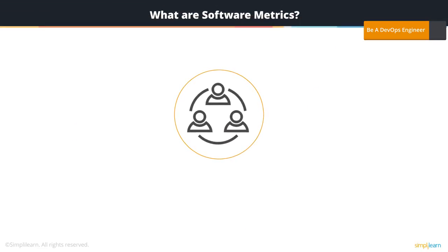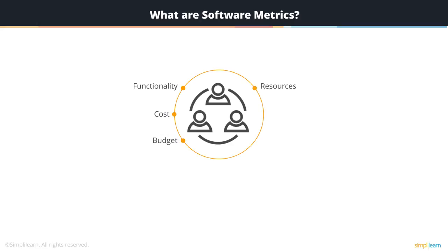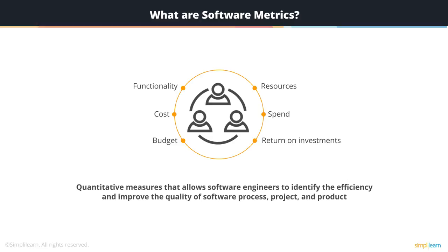While we develop software products, we need some mechanism, some way of measuring or validating that what we are doing meets our customers' expectations — not only of the functionality being developed, but also of cost, budget, various resources, the spend, and the return on investments. Metrics can be defined as quantitative measures that allow software engineers to identify the efficiency and improve the quality of software processes, projects, and the outcome product. This enables software engineers, project managers, or stakeholders to adjust software processes and improve software products if needed.